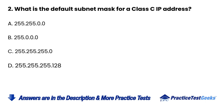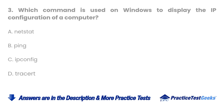Question 2: What is the default subnet mask for a Class C IP address? A. 255.255.0.0. B. 255.0.0.0. C. 255.255.255.0. D. 255.255.255.128.